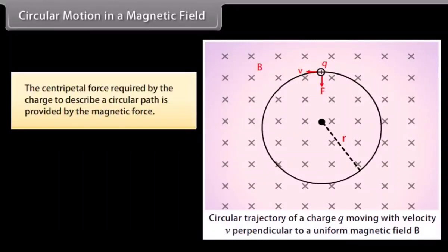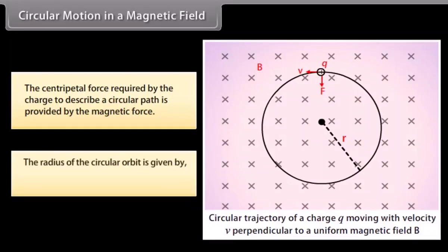The centripetal force required by the charge to describe a circular path is provided by the magnetic force. The radius of the circular orbit is given by r = MV / QB.